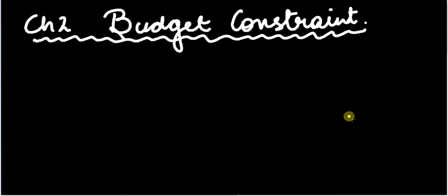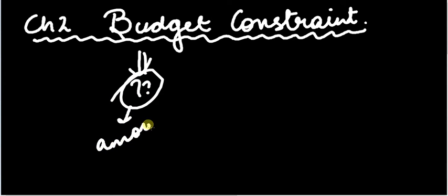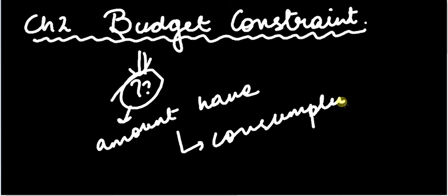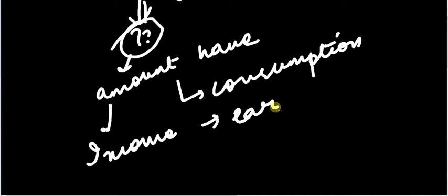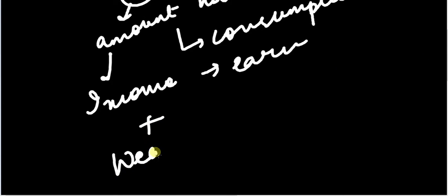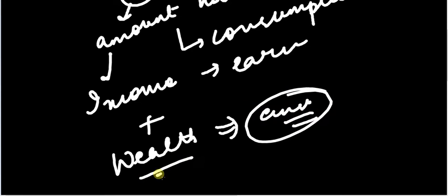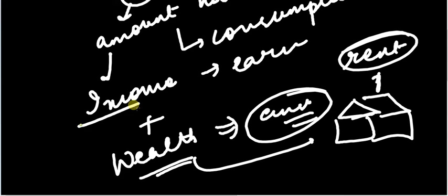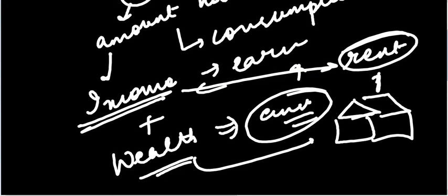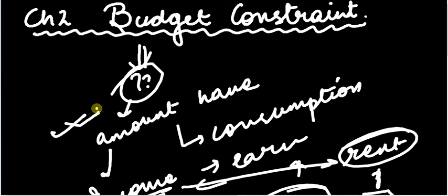Chapter 2: Budget Constraint. So what is budget? It is the amount that you have for consumption purposes. This can be only your income — whatever you earn — or it can also be income plus wealth, whatever your ancestors left for you. Suppose they left some house for you, and you get rent from this house and earn some income — so this total becomes your budget. Budget is anything that you have for your consumption purpose.